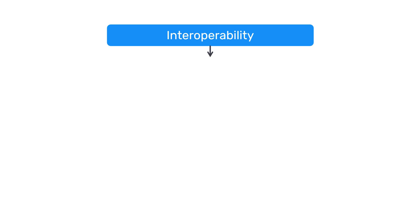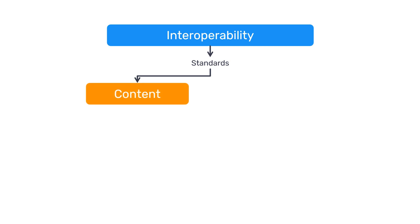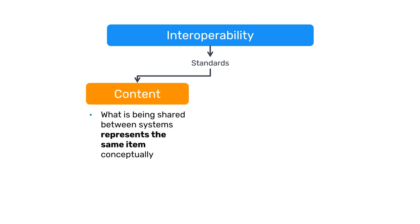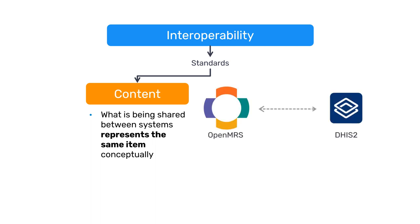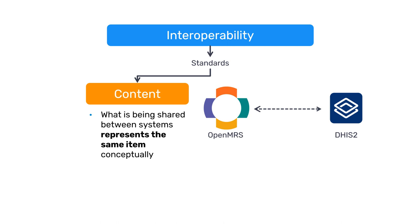Interoperability depends on standards that can be broken down into two levels. First is content. This means ensuring that what is being shared between systems represents the same item conceptually. For example, that a hospital admission record in OpenMRS contains the same disaggregations for sex and age as the corresponding aggregate data element in DHIS-2, or that the organization units in both systems are aligned.